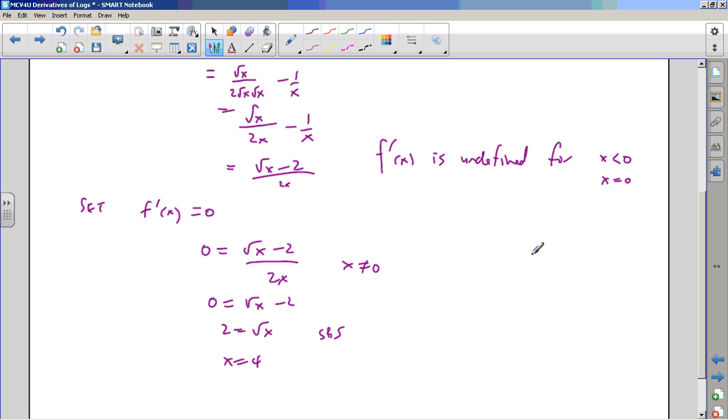And so then I get, I can think of a tiny sign chart where I see at 0 and everything over here, it's undefined. And we're worried about that. But then at 4, it's 0. At 4, the derivative is 0.